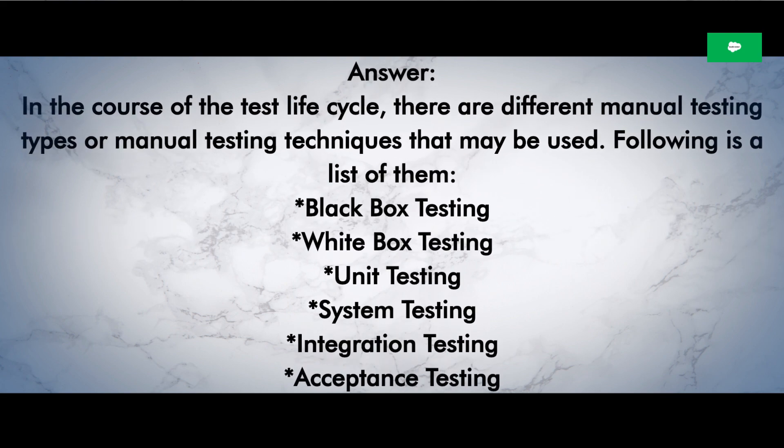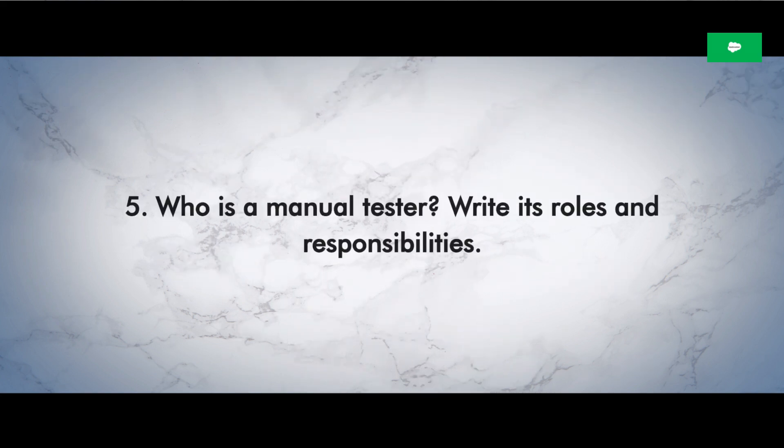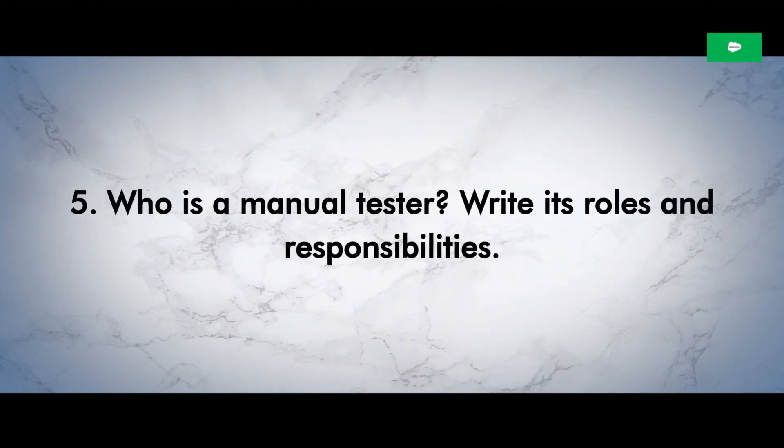Question 4: What types of manual testing are there? Answer: In the course of the test lifecycle, there are different manual testing types or techniques that may be used. Following is a list of them: black box testing, white box testing, unit testing, system testing, integration testing, and acceptance testing.